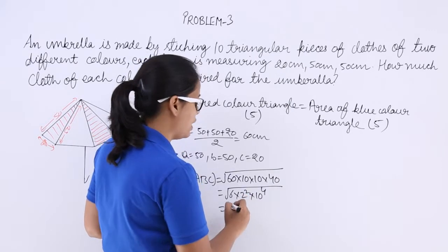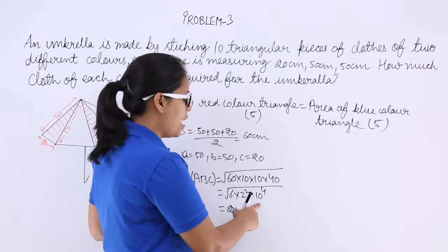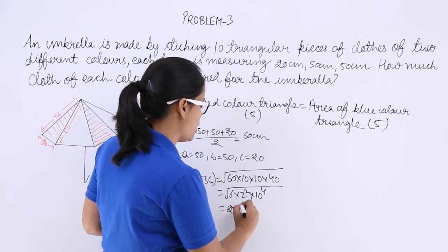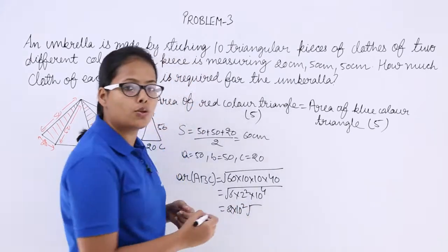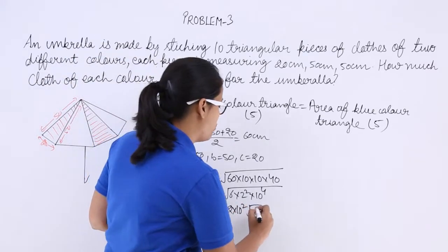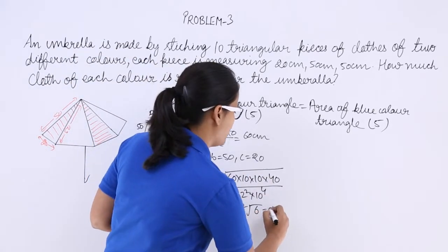When it will come out of the square root, power of this will become half again. So this will be 10 raised to power 2. And in root, what you will get? 6.